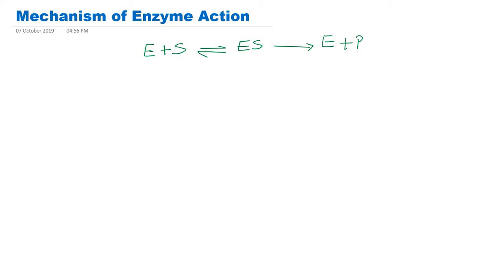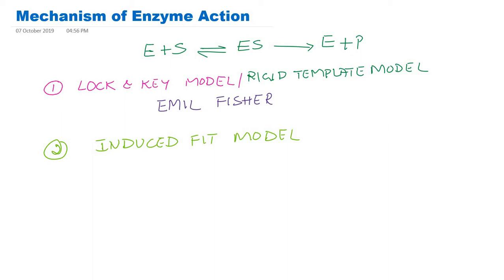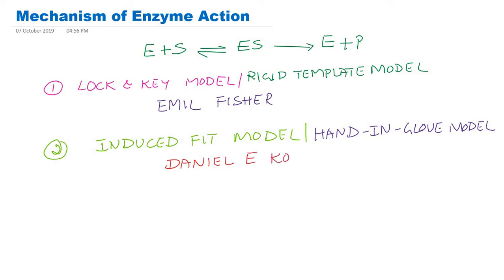There are two models or hypotheses for the explanation of enzyme action. The first model is called the Lock and Key model, also called the rigid template model, proposed by Emil Fischer in 1890 — also called the Fischer model. The second model is called the induced fit model, also known as the hand-in-glove model, proposed by Daniel E. Koshland — also known as the Koshland model.